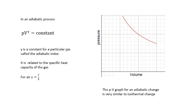Now the pressure-volume graph, the pV graph for an adiabatic process, is very similar. For the isothermal process, it was just pV equals constant, but for an adiabatic one it's pV to the gamma equals constant. And gamma is a constant for a particular gas and it's called the adiabatic index, and it's to do with the specific heat capacity of the gas.